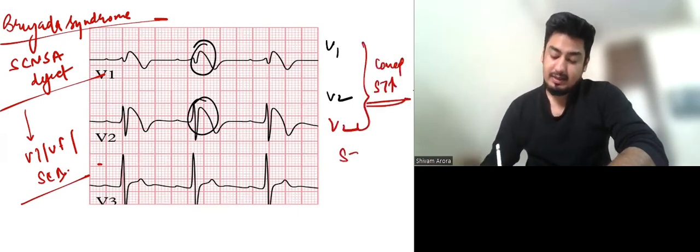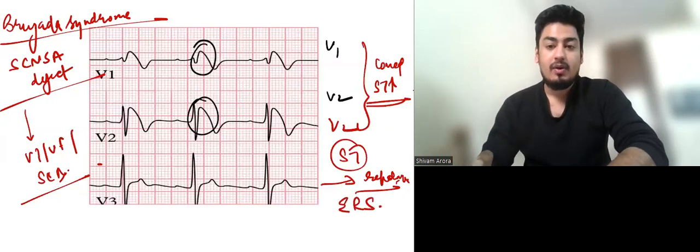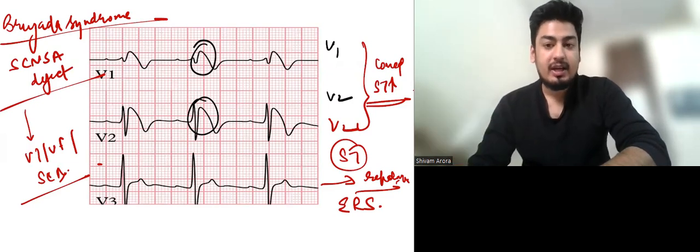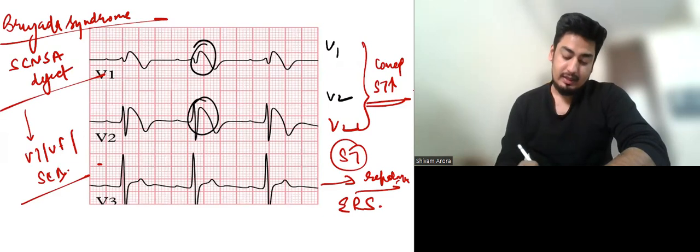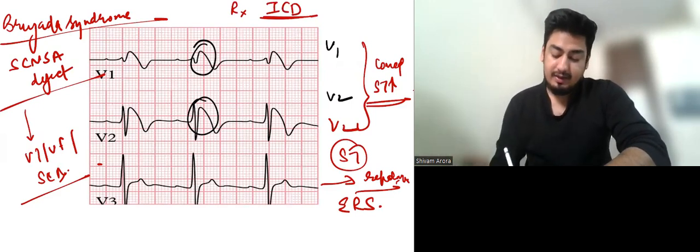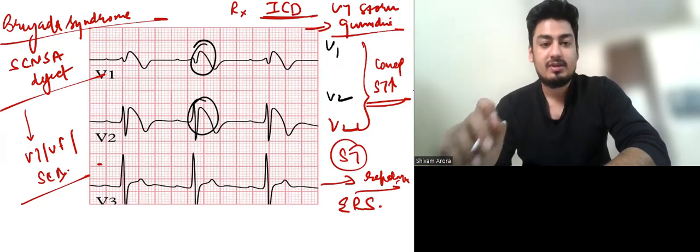One thing this Brugada is a sodium channel SCN5A defect. The patient can have VT, VF or sudden cardiac death. On ECG we have V1, V2, V3 with coved ST elevation. Now ST segment represents repolarization phase. So Brugada is a type of early repolarization syndrome. Now repolarization defect in Brugada. So if ectopic beats occur in this phase then it can precipitate VT or VF. Treatment is ICD. And if the patient has VT we can give quinidine. Now you have to tell me in the comment section that quinidine is which class of antiarrhythmic.